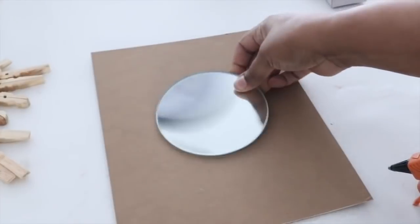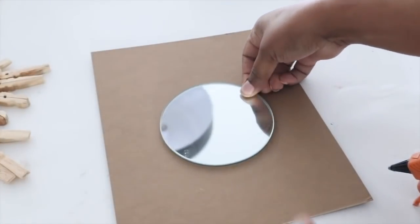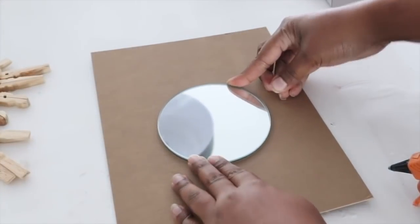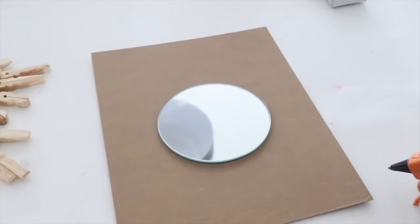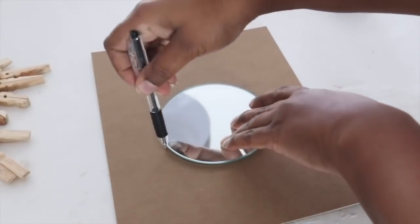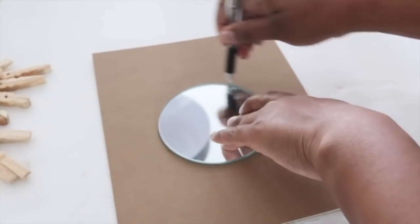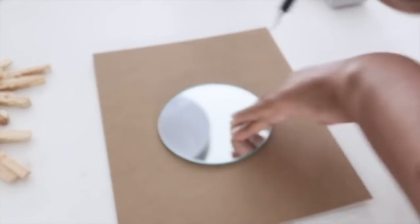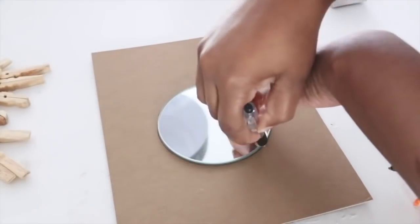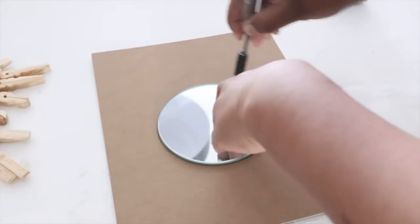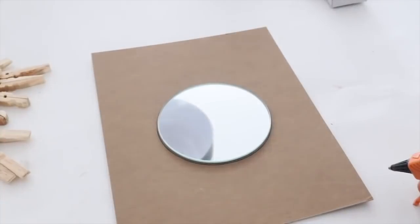So the next thing I want to do is trace out my mirror that I had. I got this from Dollar Tree a while back. I think it's like six inches in width but I'm not sure. But all we want to do is just trace around the mirror and what I'm using is construction paper. You can also use cardboard for this. You just want to have something that's thick and it's sturdy.